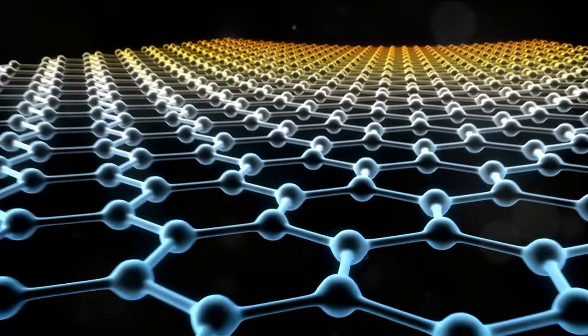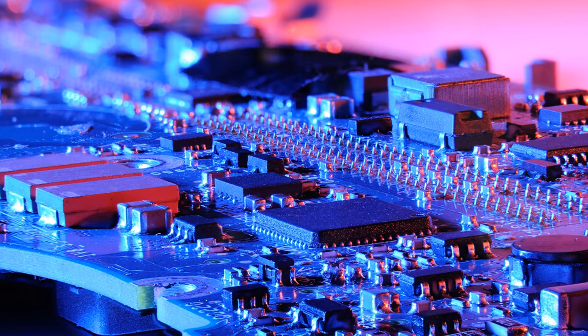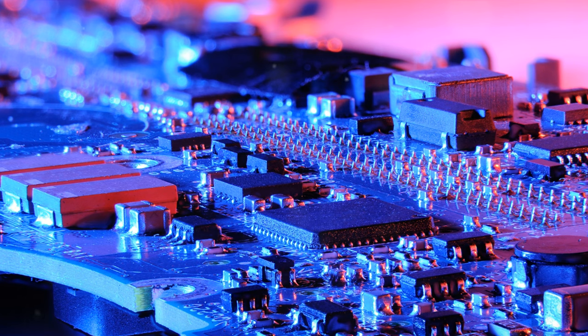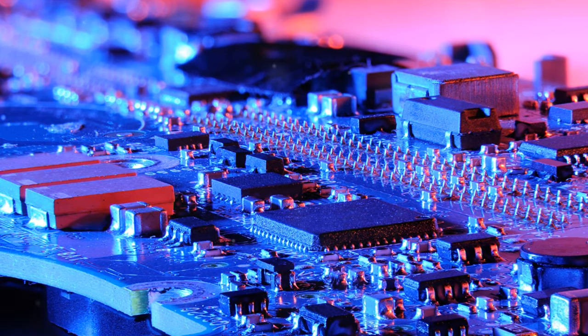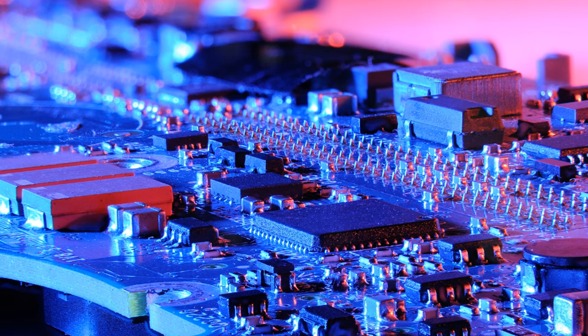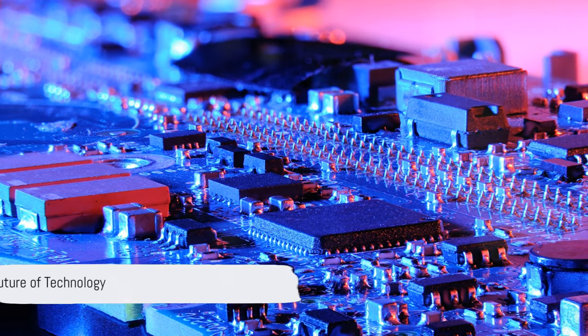Lastly, graphene is flexible and transparent, a combination not found in silicon. These properties open the door to a whole new world of possibilities, such as bendable electronics and transparent circuits. The advantages are clear, but what does this mean for the future of technology? We'll tackle that in the next segment.